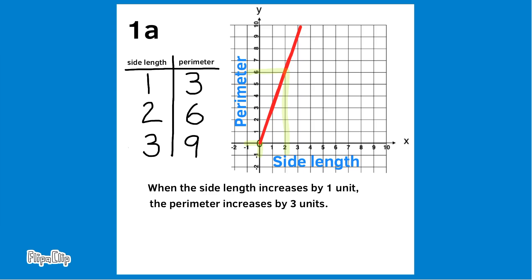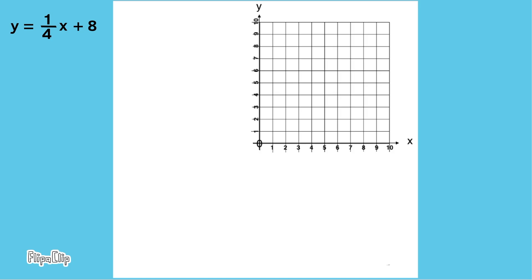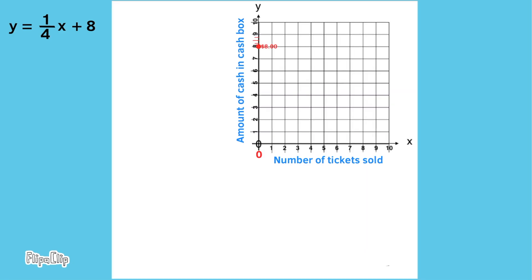Part B: The amount of money y in a cash box after x tickets are purchased for carnival games. The slope of the line is 1/4 and the y-intercept is 8. I wrote the equation y = (1/4)x + 8 to represent this situation. The x-axis represents the number of tickets sold and the y-axis represents the amount of cash in the cash box.